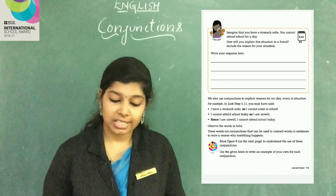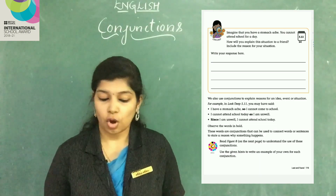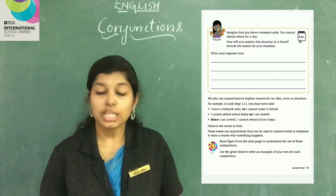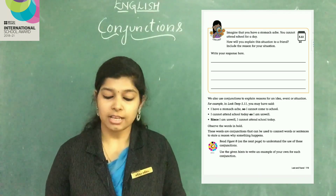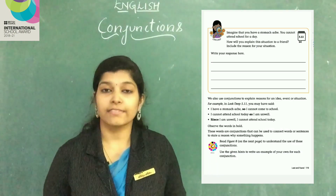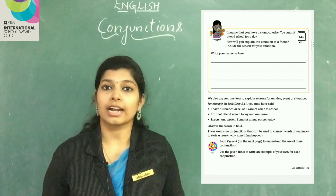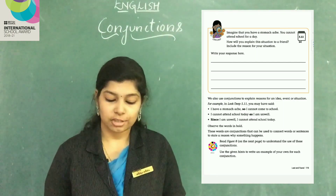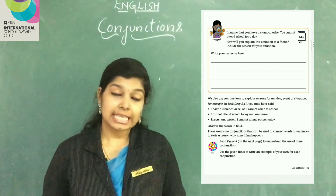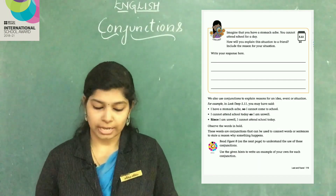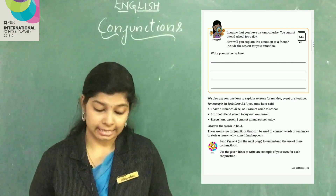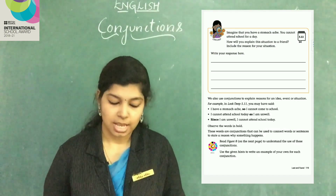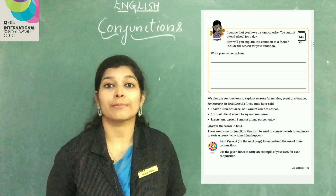We also use conjunctions to explain reasons for an idea, event or situation. For example, in the activity you may write: I have a stomach ache, so I cannot come to school. Or: I cannot attend school today as I am unwell. Or: Since I am unwell, I cannot attend school today. Observe the words in bold — so, as, since — these are conjunctions that connect words or sentences to state a reason why something happens.